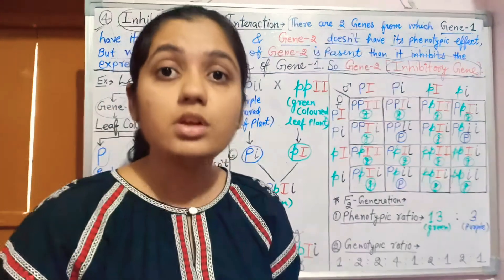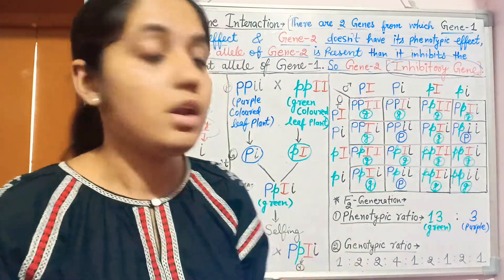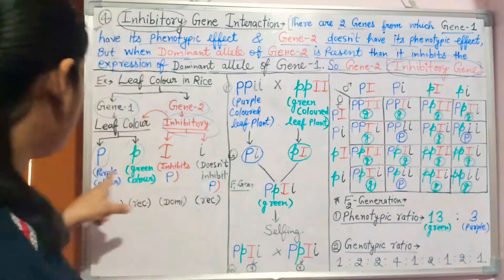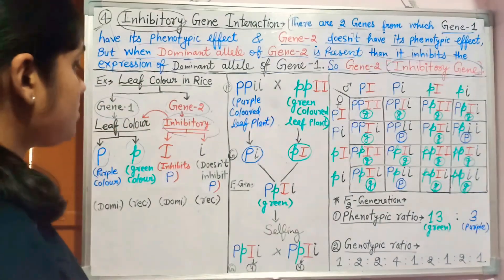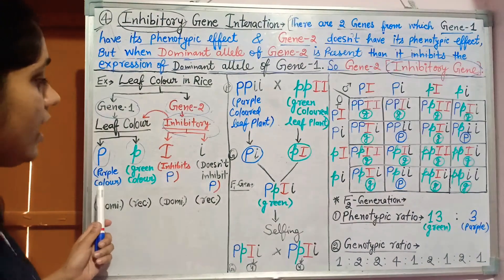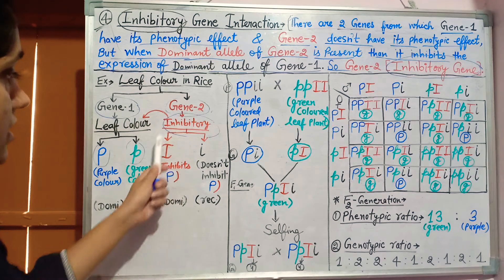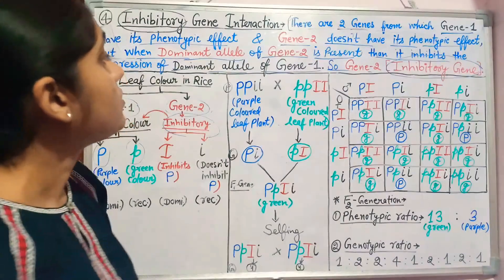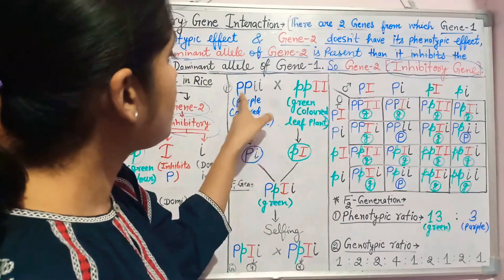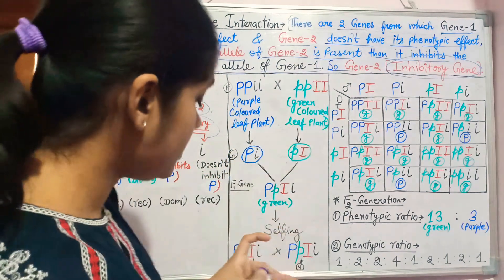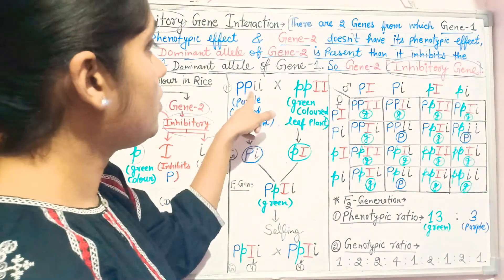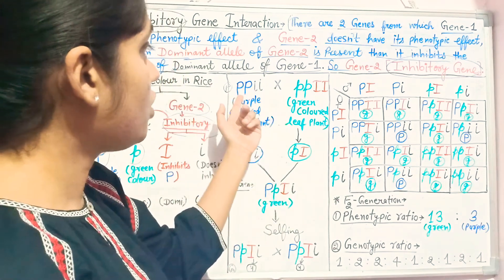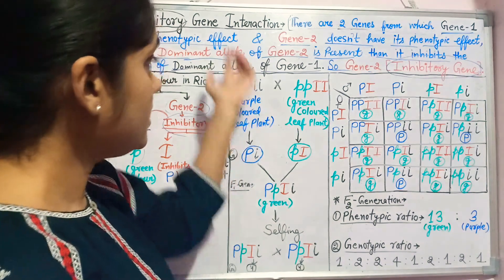There is inhibition by the dominant allele of gene two (capital I) on the dominant allele of gene one (capital P), which produces the purple color. The purple color of leaves only occurs when the dominant inhibitory allele capital I is absent. In the cross, the first parent has a purple-colored leaf plant because it has no dominant inhibitory gene, so the dominant allele for purple color is expressed.